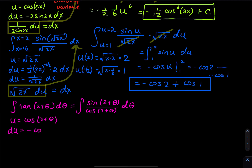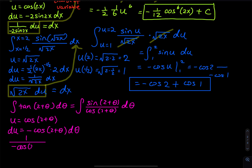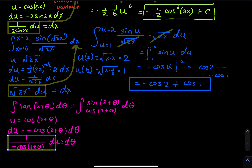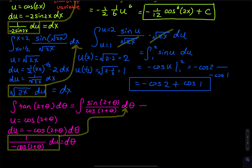Taking the derivative: du equals negative sine(2+θ) times 1 dθ (the derivative of 2+θ is 1, so no extra factor). Isolating dθ: dθ equals 1 divided by negative sine(2+θ) du. Now we perform the change of variable, substituting this expression for dθ into the integral.